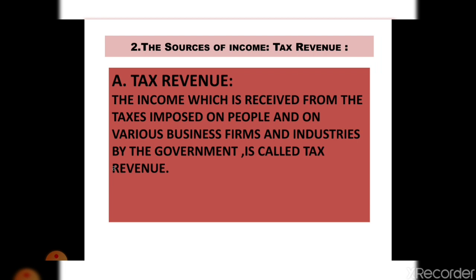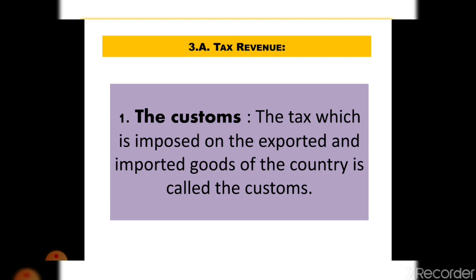Tax revenue is the income received from taxes imposed on the people and on various business firms and industries by the government. The first type is customs, which is the main source of income of the government of Bangladesh. Customs is the tax imposed on exported and imported goods of the country — while the country conducts international trade, they have to pay customs duty.